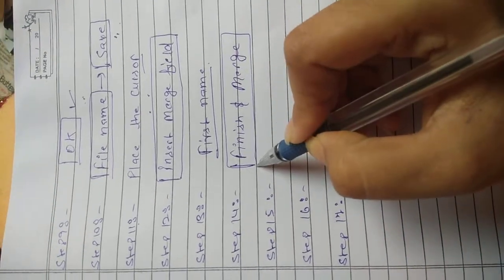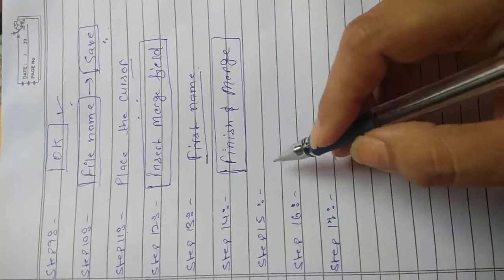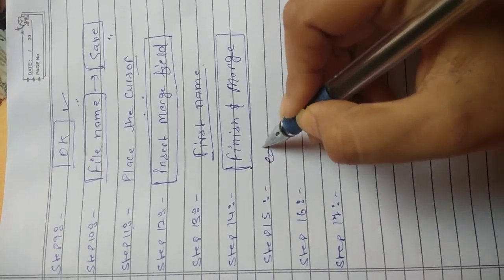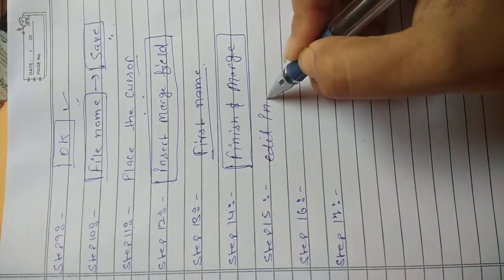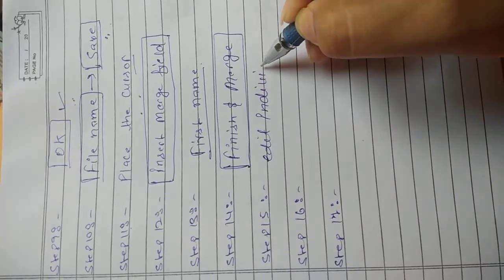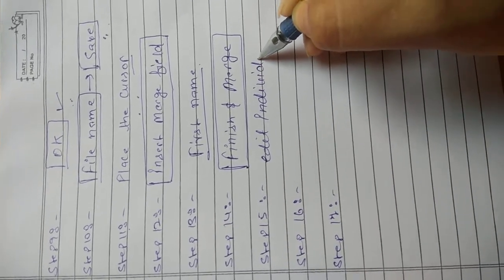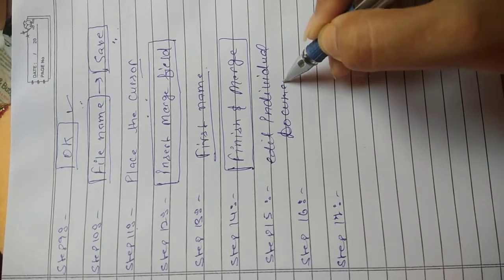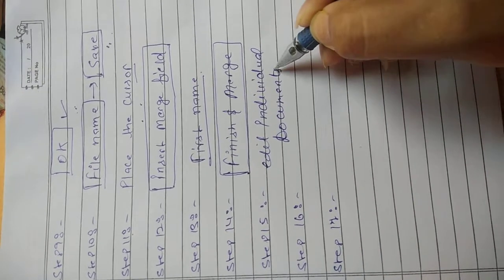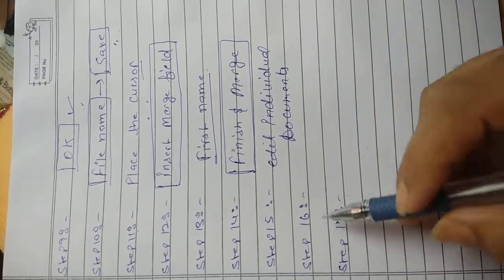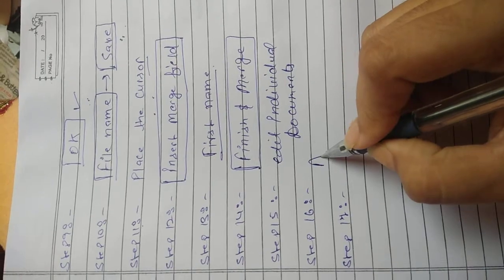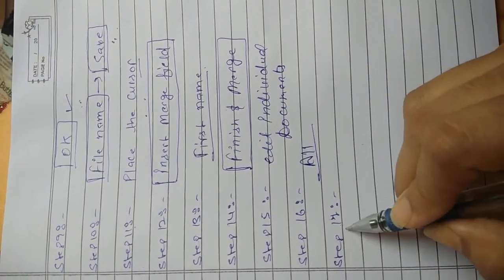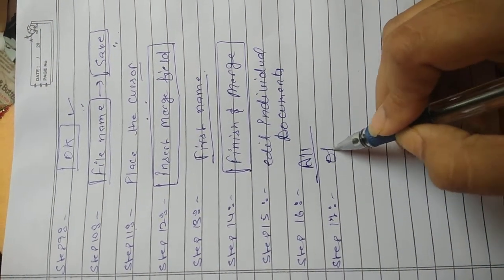Step 3: From the list, select the type of merge that you want to create. For example, we will create Letters. Step 4: Type the letter which you want to send.